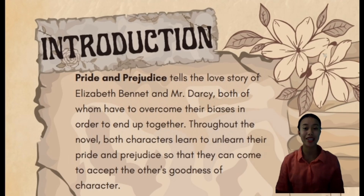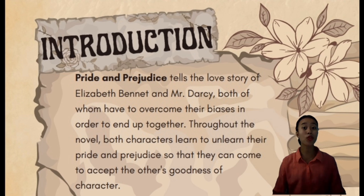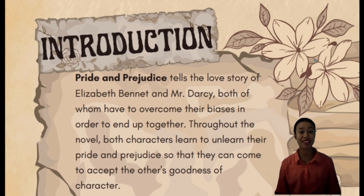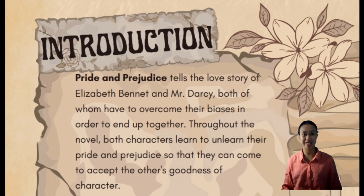Pride and Prejudice tells the love story of Elizabeth Bennet and Mr. Darcy, both of whom have to overcome their biases in order to end up together. Throughout the novel, both characters learn to unlearn their pride and prejudice so that they can come to accept the other's goodness of character.